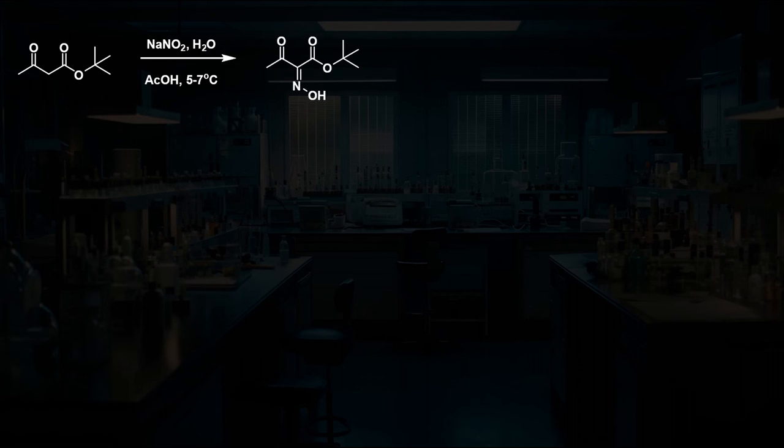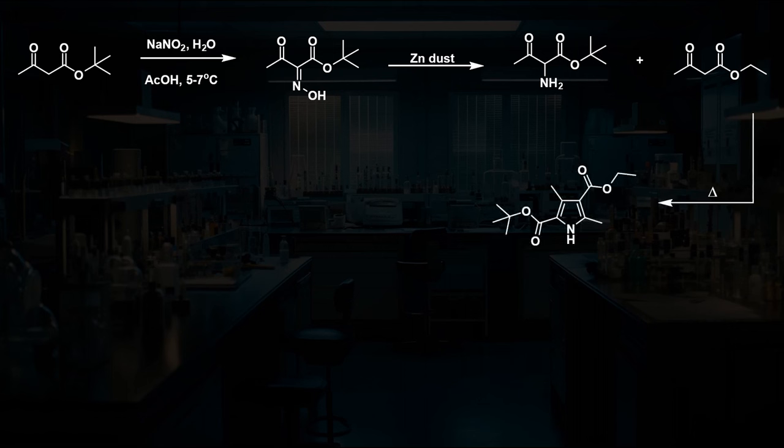The synthesis starts by reacting this starter material with sodium nitrite to form an oxime group, which can be reduced to the amine using zinc metal. This alpha-amino ketone needs to be generated and used fresh in solution, due to its ability to self-condense with itself. Once prepared, it is reacted with ethyl acetoacetate to form a pyrrole ring.